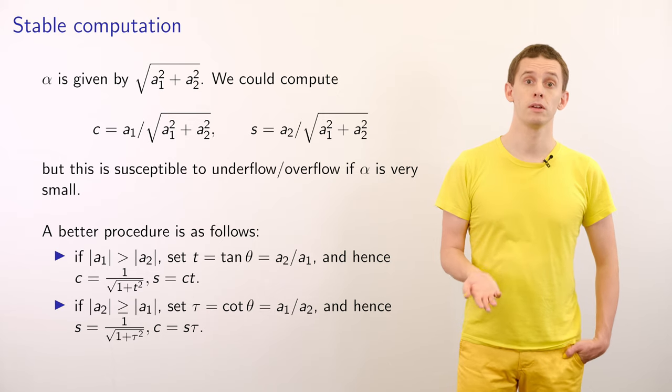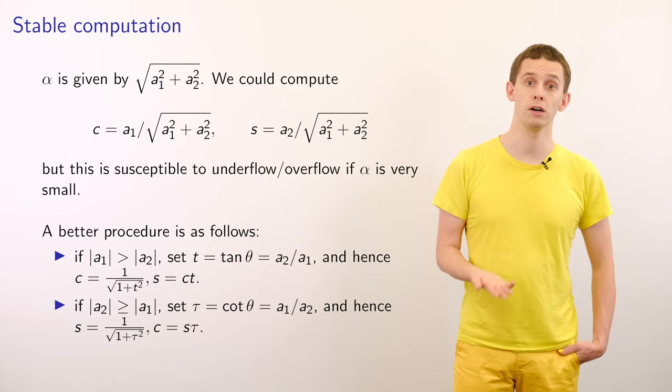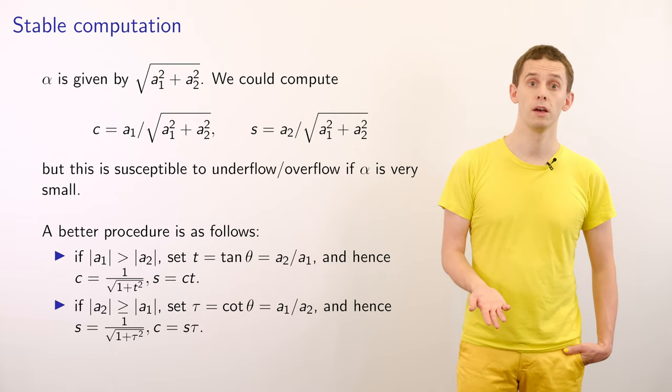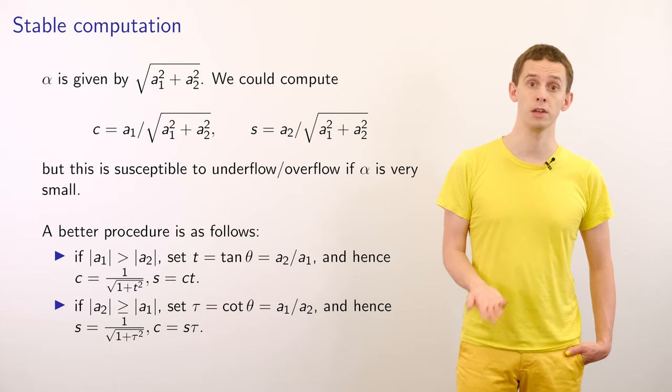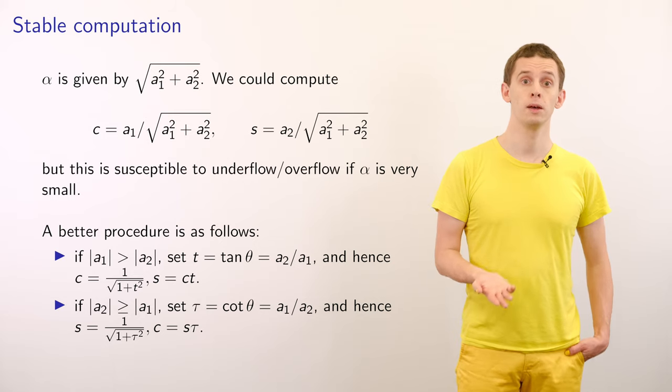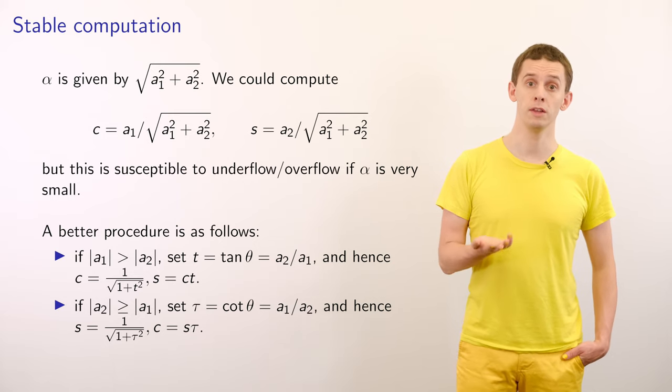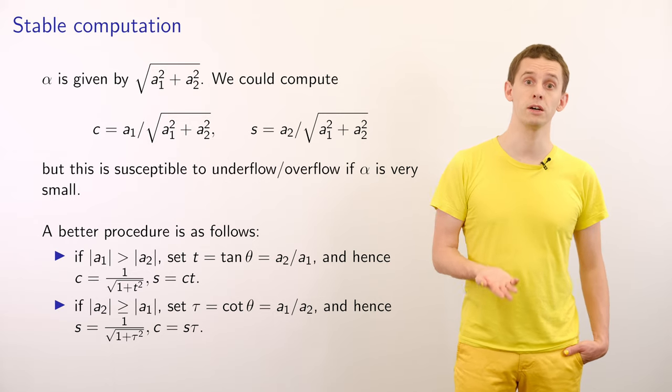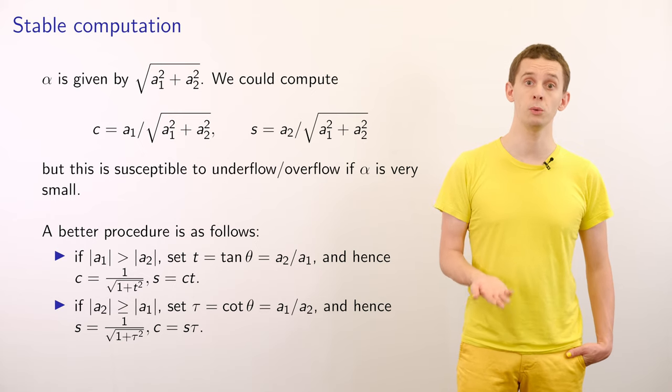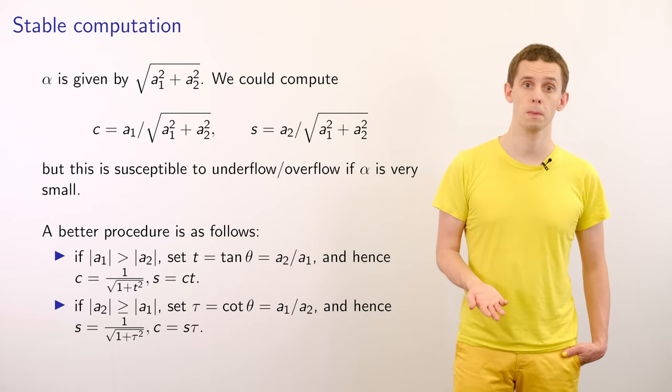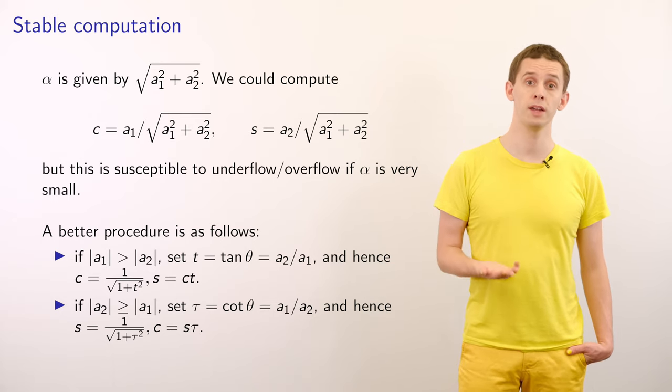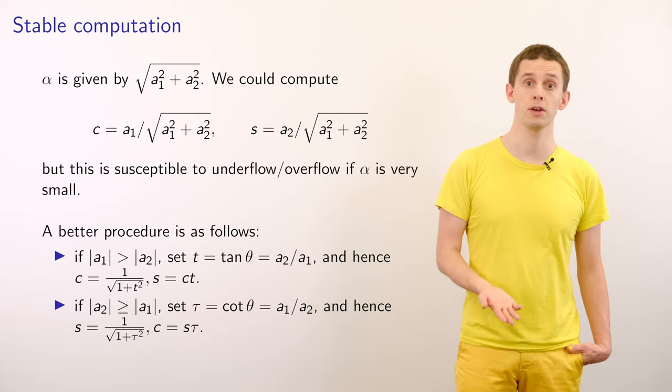To see this, let's suppose that a_1 and a_2 were on the scale of 10 to the minus 200. Within double precision floating point arithmetic, 10 to the minus 200 is perfectly fine to be represented. However, to evaluate these expressions for c and s, we'd have to look at the square of these terms. And that will give us terms on the scale of 10 to the minus 400, which is outside the range of exponents that can be dealt with in double precision floating point arithmetic. What would happen is those numbers would get rounded to 0, and we therefore end up with a division by 0 error in these calculations.